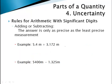When adding or subtracting numbers with significant digits, the answer can only be as precise as the least precise measurement you're using. To find how many decimal places to round to, add the numbers as you normally would. For example, 5.4 plus 3.172 gives 8.572. I like to mark the end of the tenths column on 5.4 with a dotted line, because that's my least precise measurement. When I record the final answer, I need to round to the nearest tenth — giving 8.6 meters.